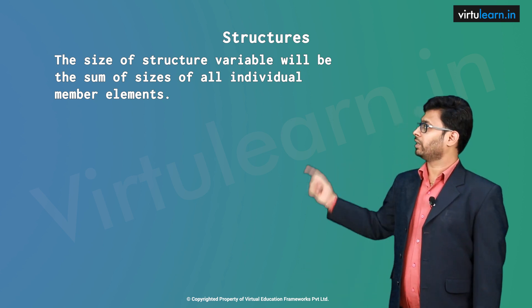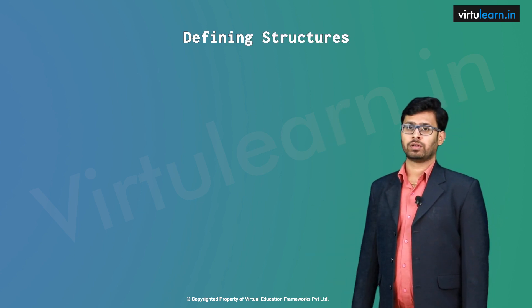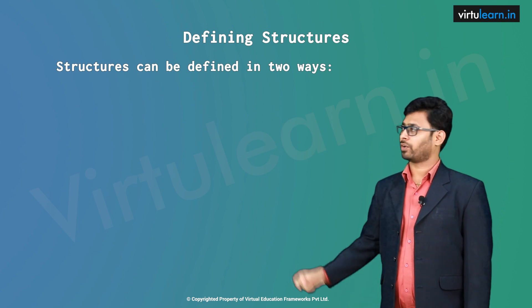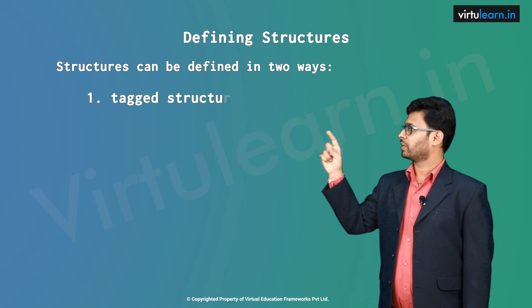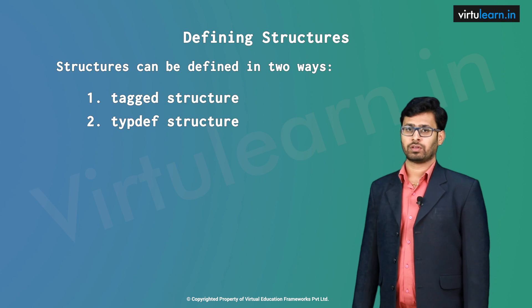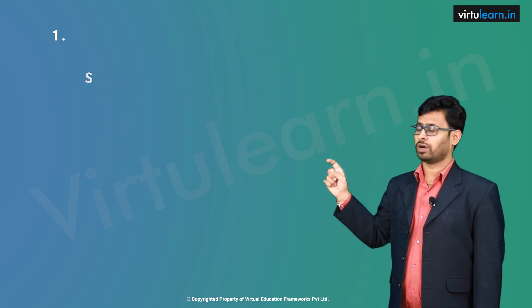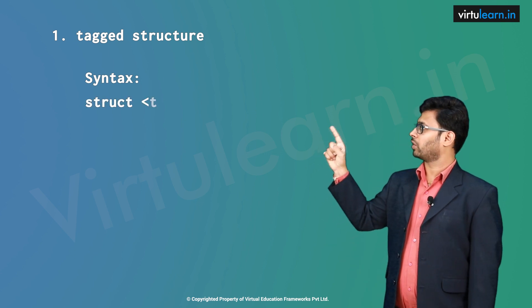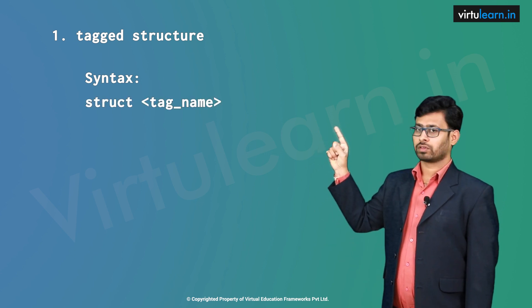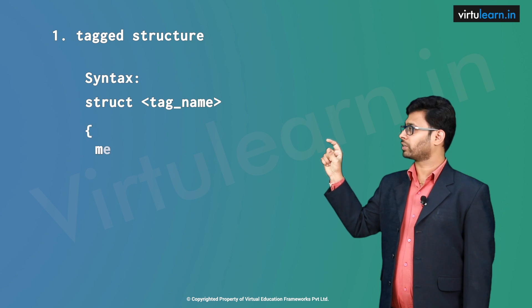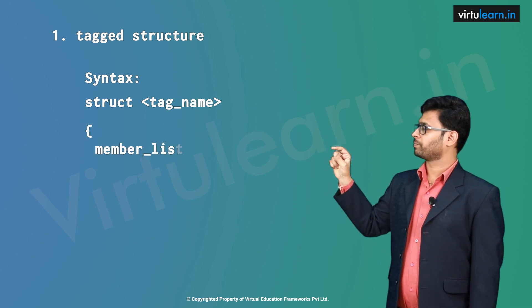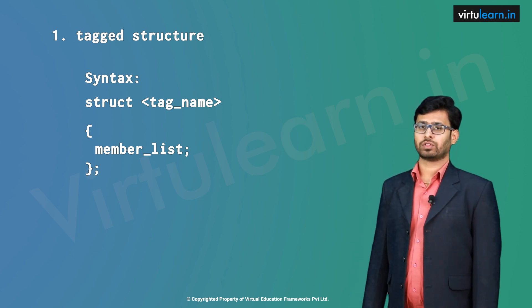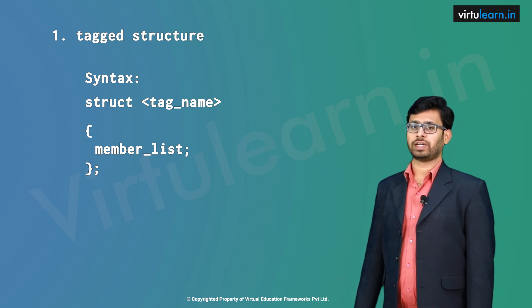Now let us see how to define a structure. Structure can be defined in two ways: the first one is tagged structure and the second one is typedef structure. Now let us see the syntax of tagged structure. It is 'struct' followed by a tag name, within the curly brace we write the member list elements, close the curly brace, and put a semicolon.